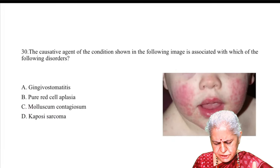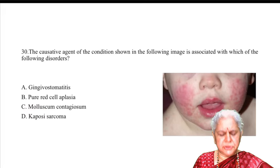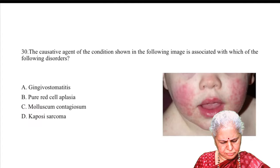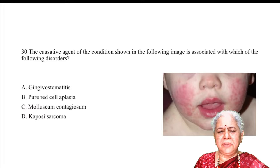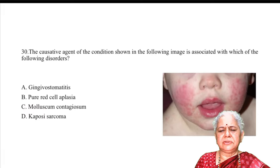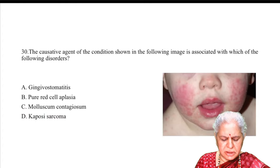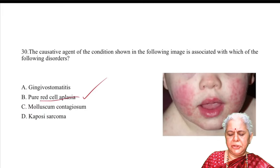Question on the causative agent shown in the image: which disorder is it associated with? Answer B — pure red cell aplasia. Parvovirus B19 is associated with pure red cell aplasia. Gingivostomatitis is typical of herpes; molluscum contagiosum and Kaposi sarcoma do not look like this. Parvovirus B19 is the correct association.